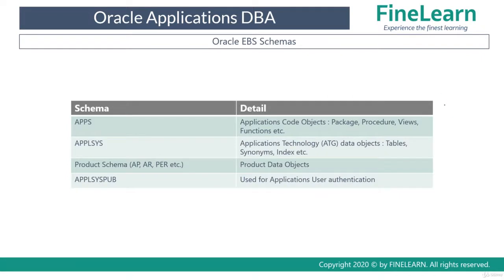Once you install Oracle E-Business Suite, hundreds of schemas are created. The most important ones are as follows. The first is the Apps Schema. Apps Schema is one of the most frequently used schemas by Oracle Apps DBAs, and developers use it as well. It also has to be secured because the Apps Schema has a lot of privileges — even privileges related to the system, similar to SYS. So it is very important that the Apps password is always kept secure.